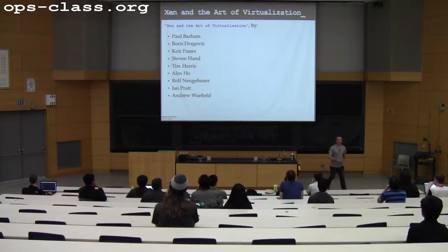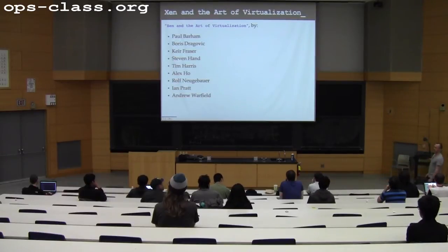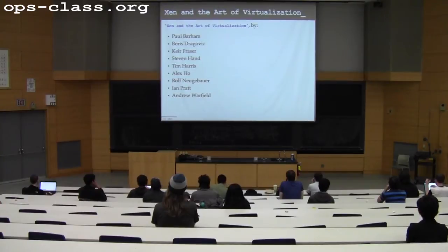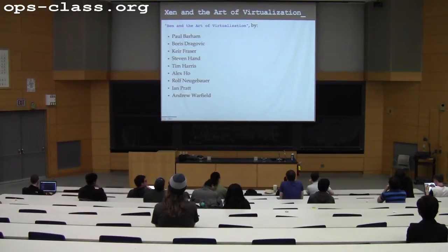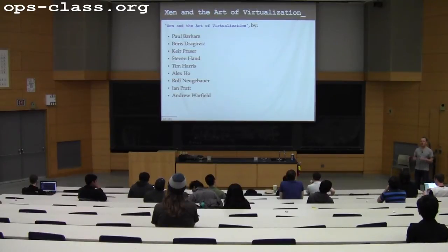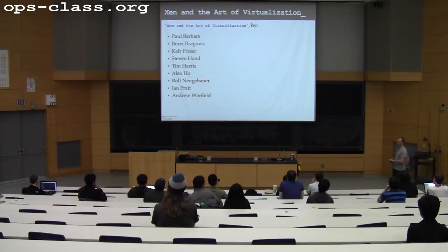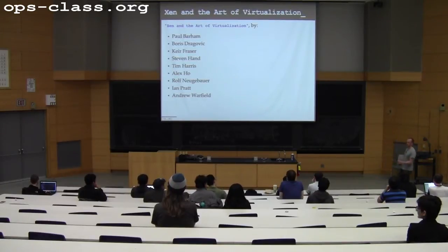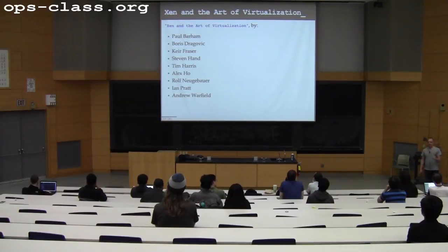Today we're going to talk about the other approach to virtualization. On Friday we talked about full hardware virtualization, where the goal was to take an unmodified operating system and run it as a guest inside a host operating system, inside a virtual machine provided by a virtual machine monitor. Today we're going to talk about a different approach that has some different trade-offs.